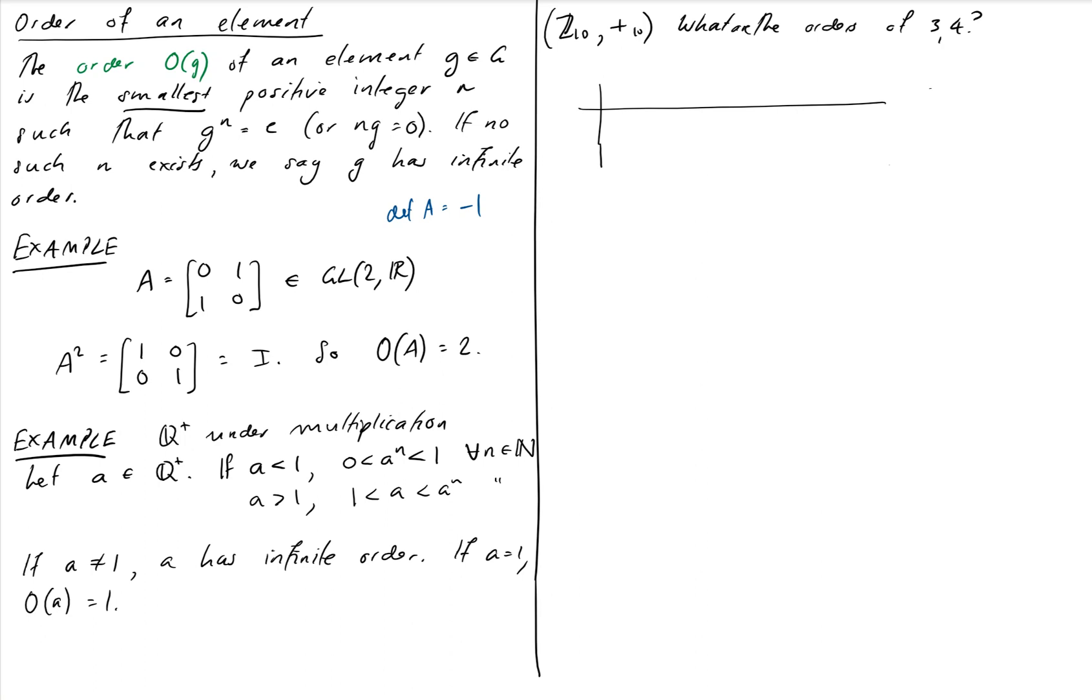So essentially what we're going to do is we're just going to take multiples of 3 and 4. So I'm just going to take successive add 3 on numerous times. We're in Z10, so the most we're ever going to do is 10 of them. So essentially we're just going to keep adding 3s on until we get to the identity. And what is the identity for Z10? The identity for ZN is always equal to 0.